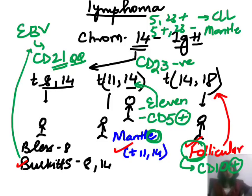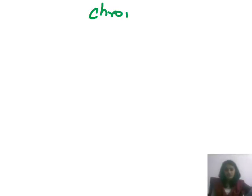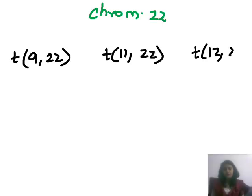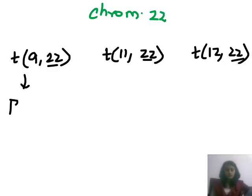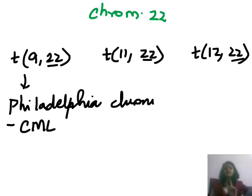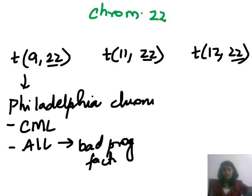Moving to chromosome 22 translocations: you have 9;22, 11;22, and 12;22. Translocation 9;22 is the Philadelphia chromosome. It is seen in CML, but remember it is not specific for CML — a common exam mistake. It is positive in both CML and ALL, where in ALL it is a bad prognostic factor.